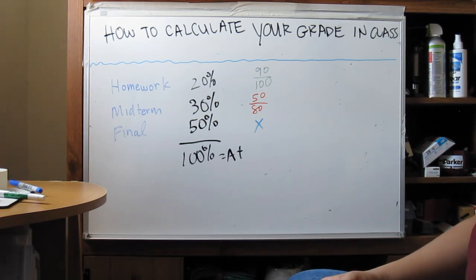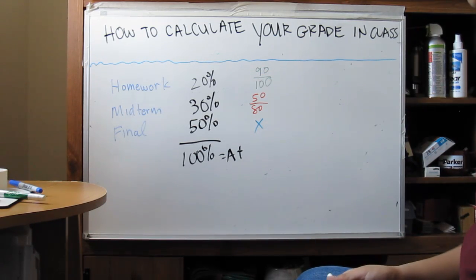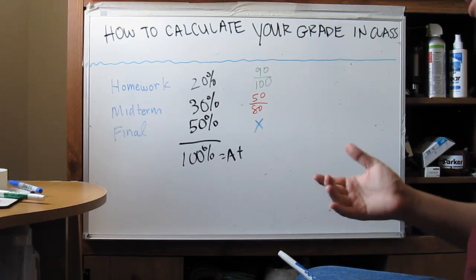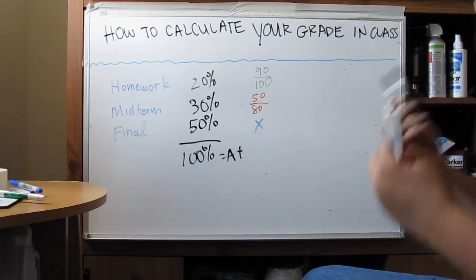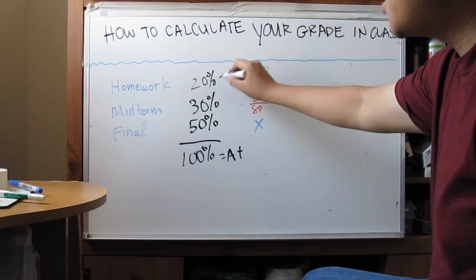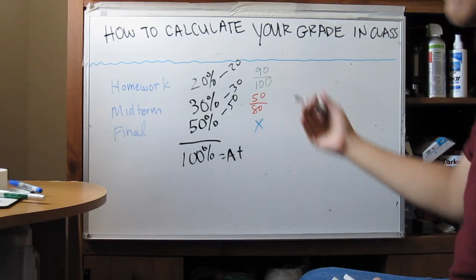The first thing we want to do is figure out how much percentage did we get of 20%. So to make it make sense, we'll just say, how many points did you get? We'll say this is 20 points, this is 30 points, and this is 50 points, and 100 points gives you your A+.